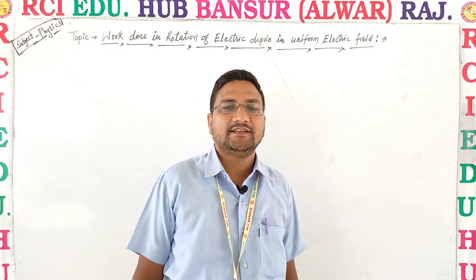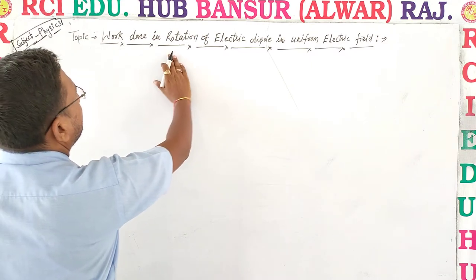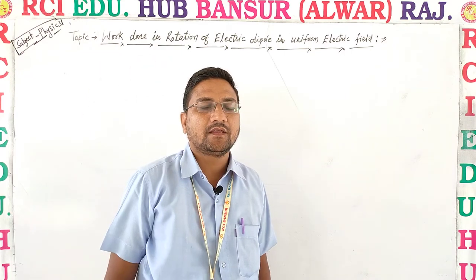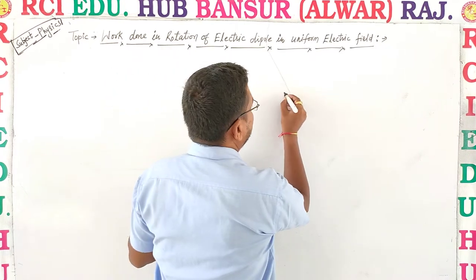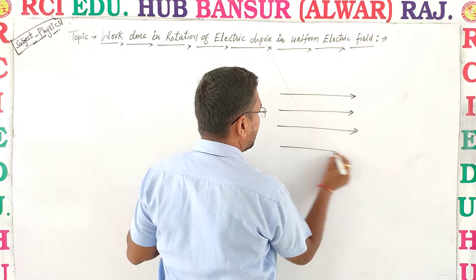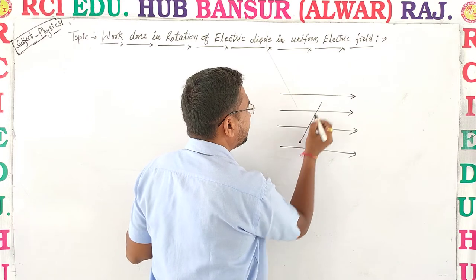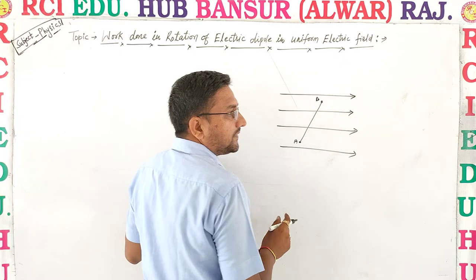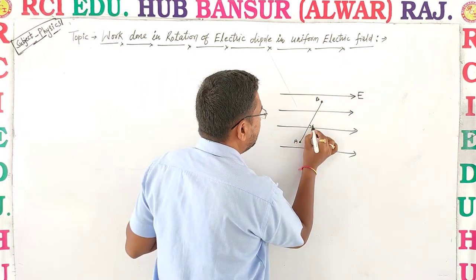RCI Online Classes. Dear students, our next topic is 'Work done in rotation of electric dipole in uniform electric field.' We consider a uniform electric field, and an electric dipole AB placed at an angle theta1 with the electric field.